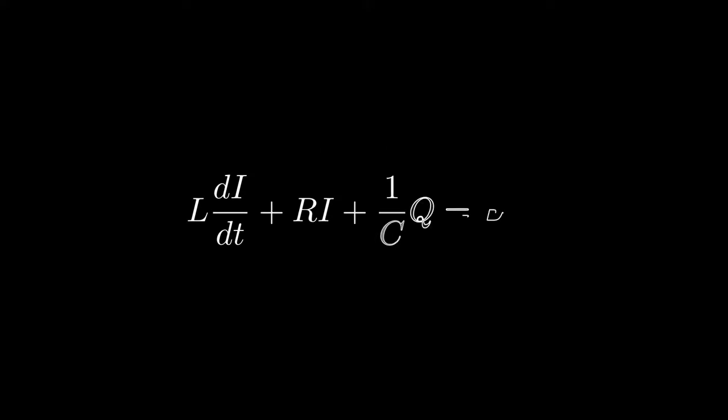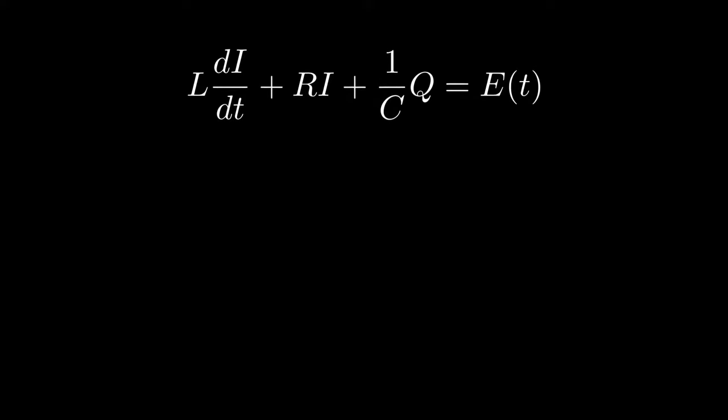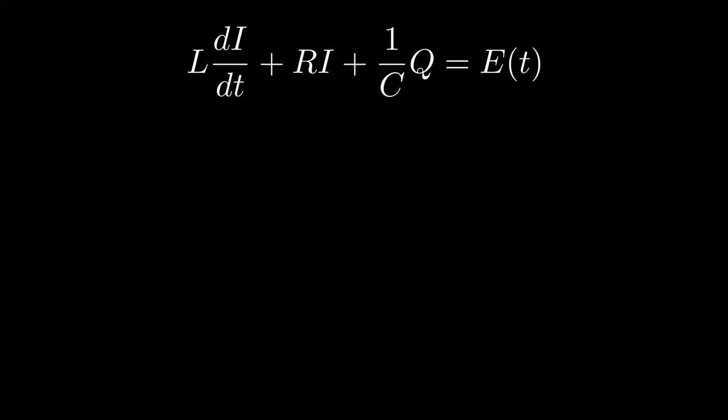So now I'll go over the basic equations that have to do with this type of circuit. The main one that we'll be using in this chapter is as follows: L times di/dt plus R times I plus 1 over C times Q is equal to E of T. Now let's go over each of the individual circuit elements.